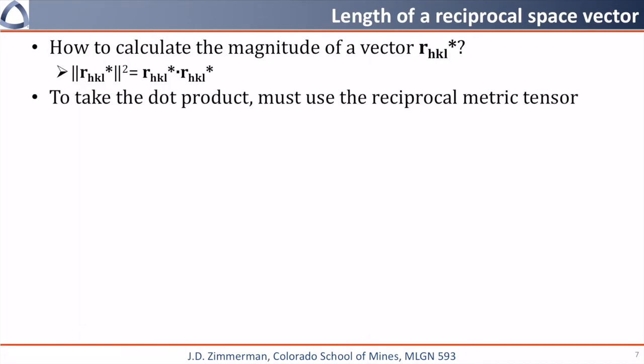As we often work on non-orthonormal coordinate systems, we can easily write the magnitude of r-star squared as equal to r-star G star r-star.